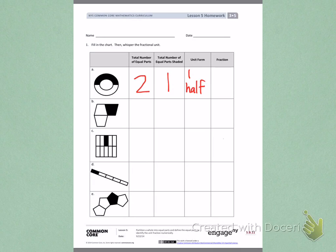I can also write this as a fraction in numerical form using the numbers two equal parts and one part shaded. I would write the fraction as 1 over 2. And that fraction says 1 half.